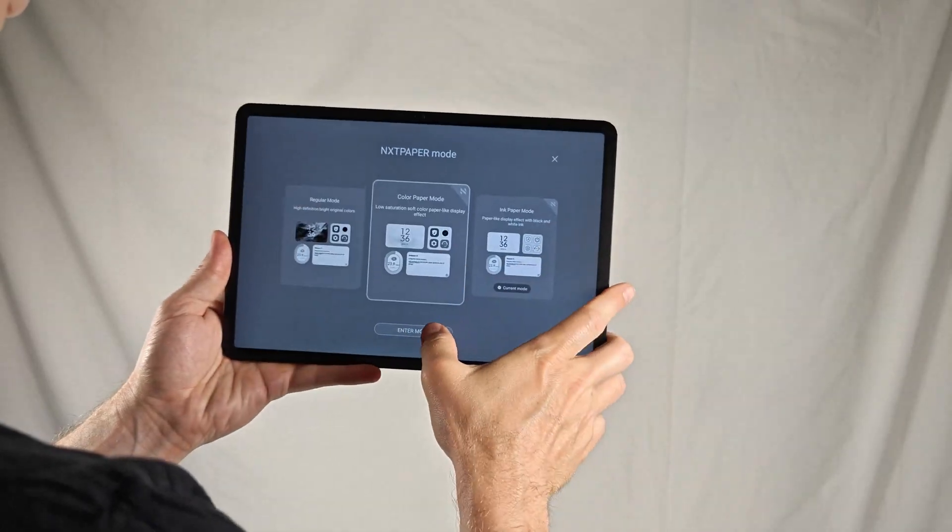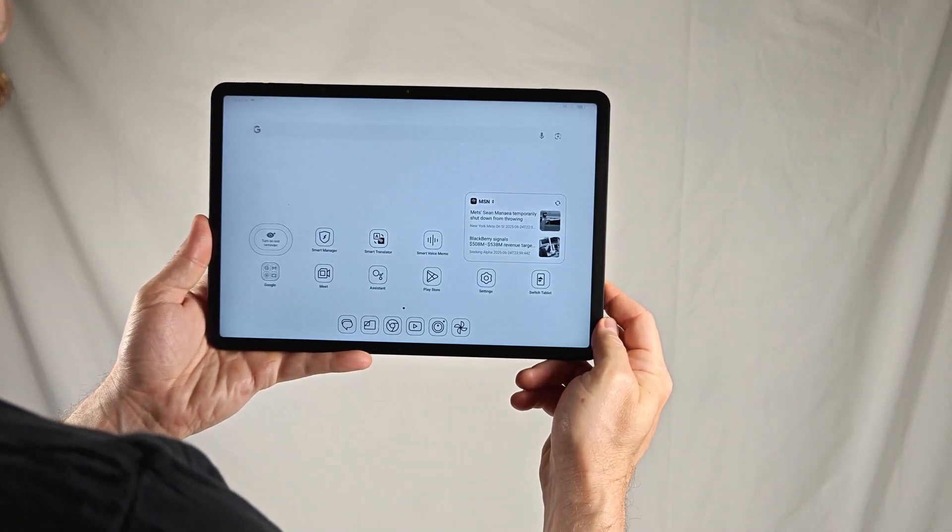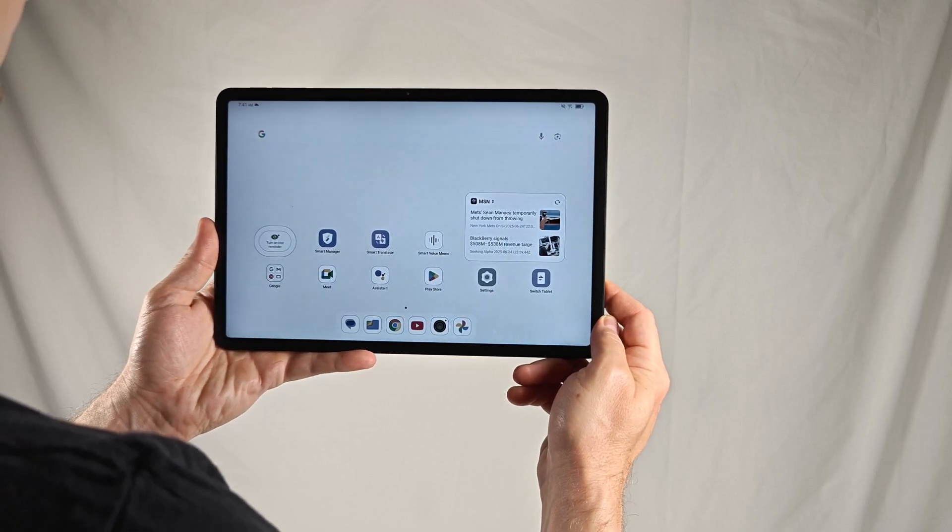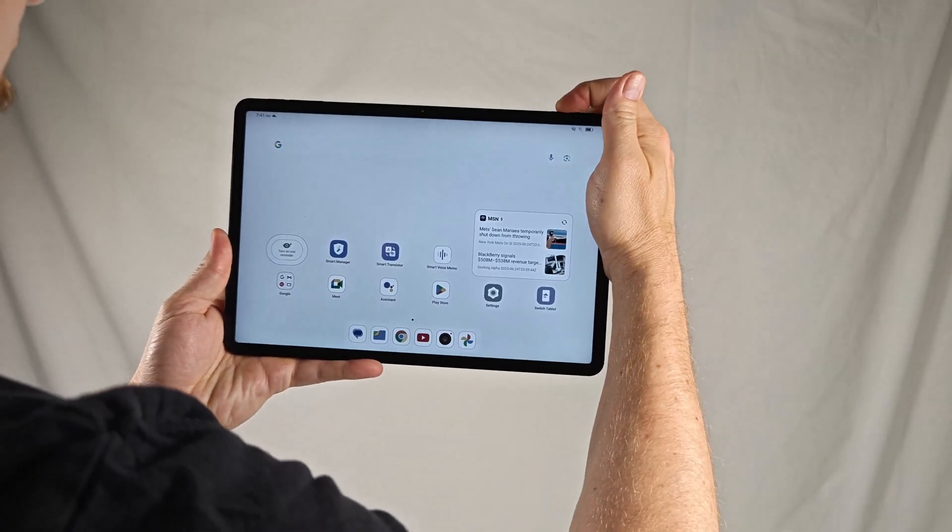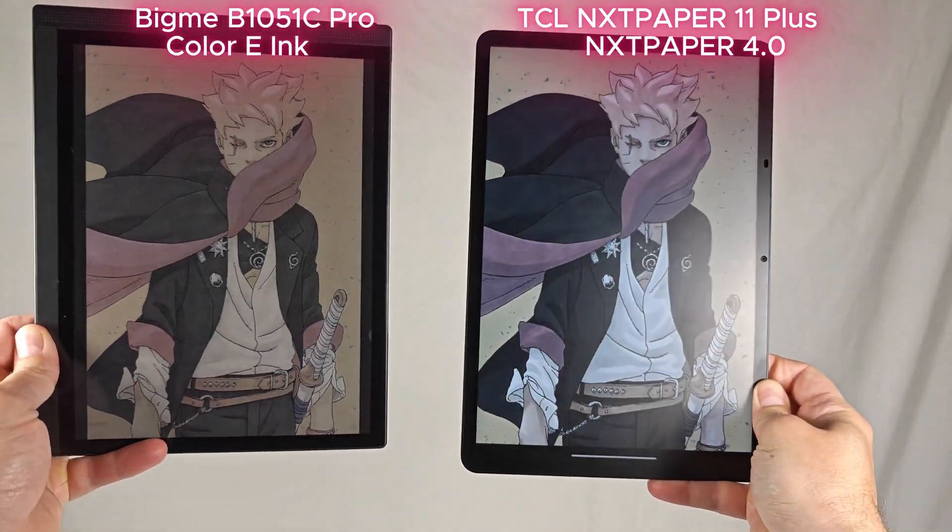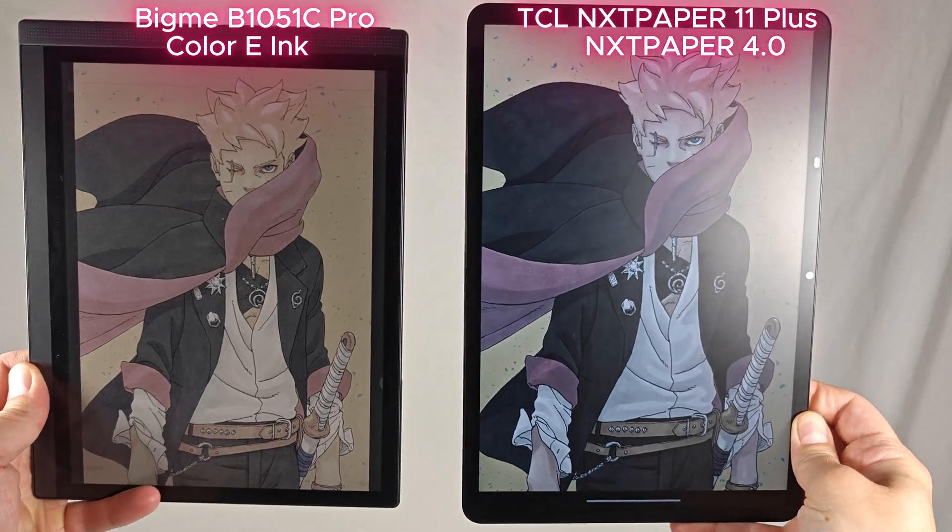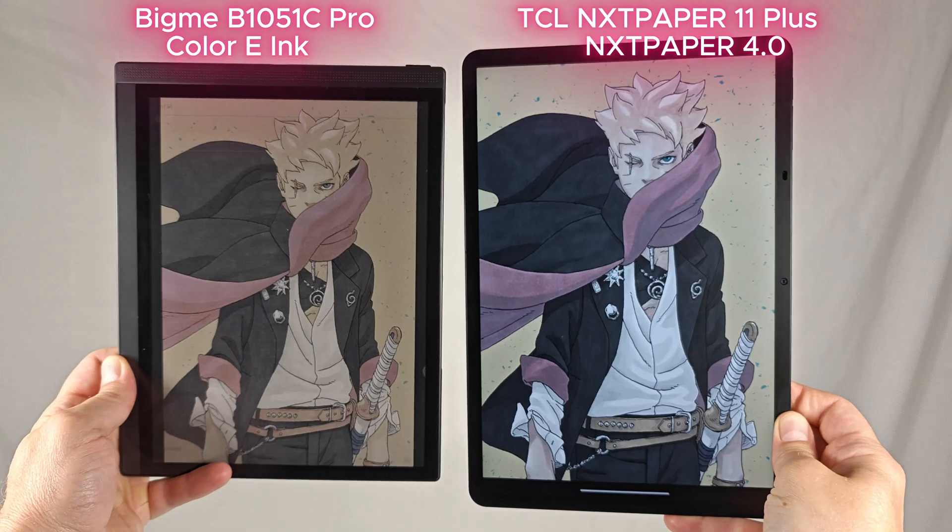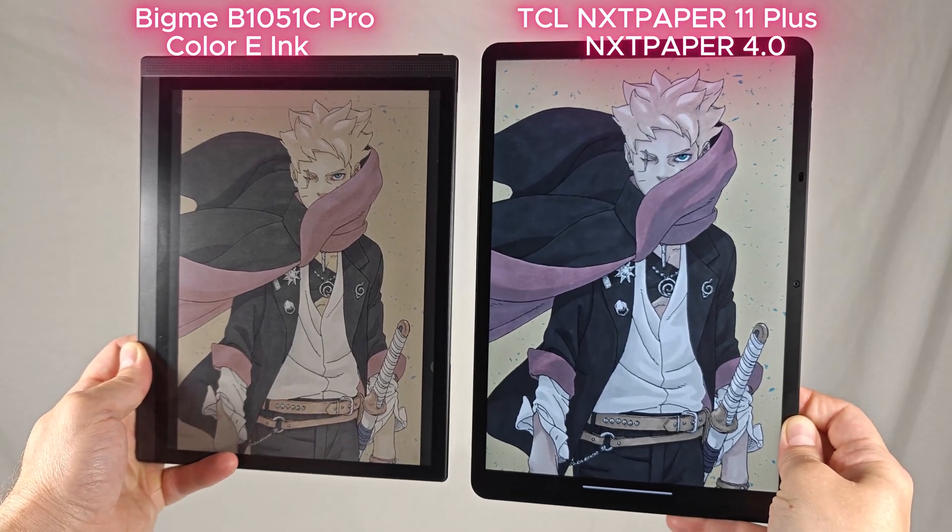Regular mode is self-explanatory, that's just normal colors, while color paper mode drops the saturation significantly and simplifies on-screen elements to look more like color e-ink. Here it is next to the BigMe B1051C Pro, my favorite color e-ink tablet. Notice how it's not quite identical to how color e-ink looks, but it's got the same general look.